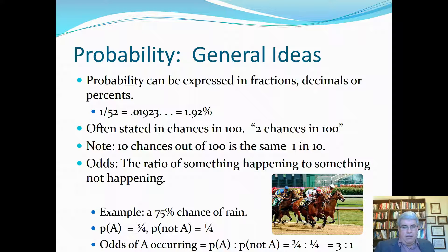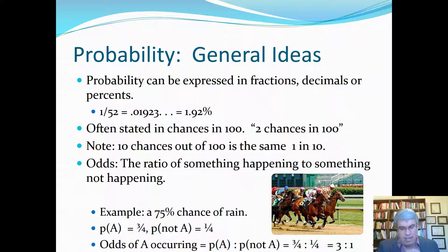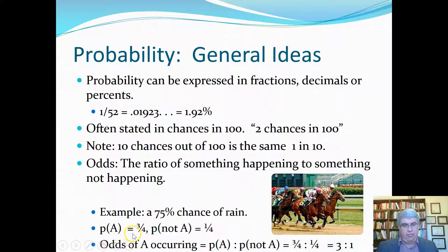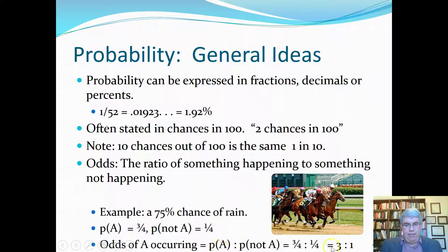Another concept related to probability is odds. We won't use odds much in this class, but in medicine and nursing, odds ratios are fairly common. For example, if there's a 75% chance of rain tomorrow, the probability of rain is 3/4 and the probability of no rain is 1/4. The odds of rain occurring are the probability of rain divided by the probability of no rain: 3/4 divided by 1/4 gives 3 to 1 odds for rain tomorrow.